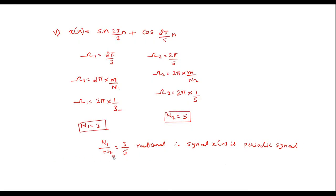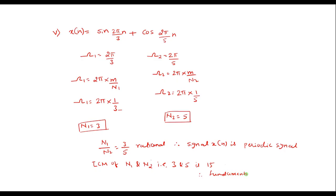The fundamental period is obtained by taking the LCM of N₁ and N₂, that is LCM(3, 5) = 15. So the fundamental period is N = 15. Thank you for watching.